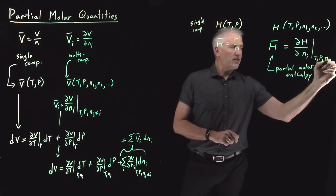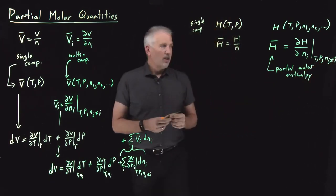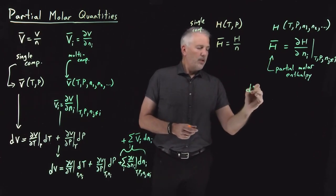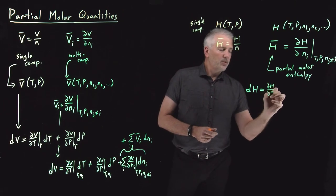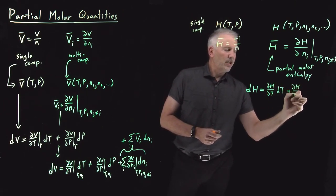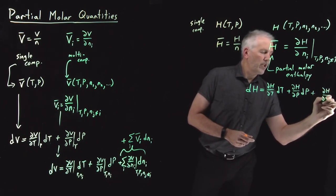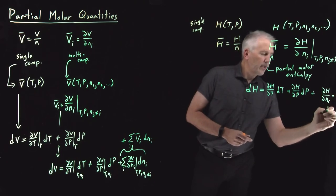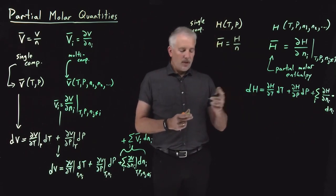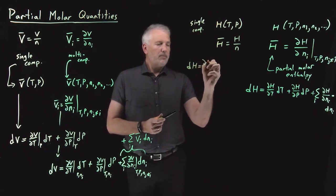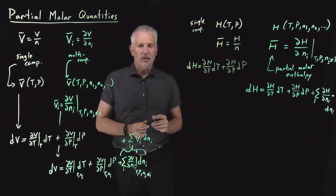The partial molar enthalpy is defined while holding T constant, P constant, and moles of everything else constant. Likewise, if I want to describe how enthalpy changes in response to thermodynamic changes, I can write it as a piece due to temperature change, a piece due to pressure change, and a piece due to the rate at which enthalpy changes when I change number of moles — multiplied by that change in moles, summed over all substances. This is the more complicated version of the simpler expression dH = (dH/dT)dT + (dH/dP)dP used in a single-component system.